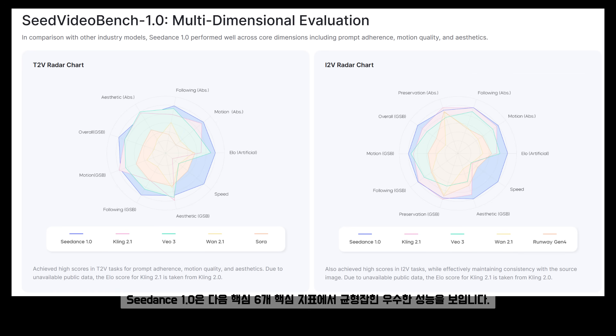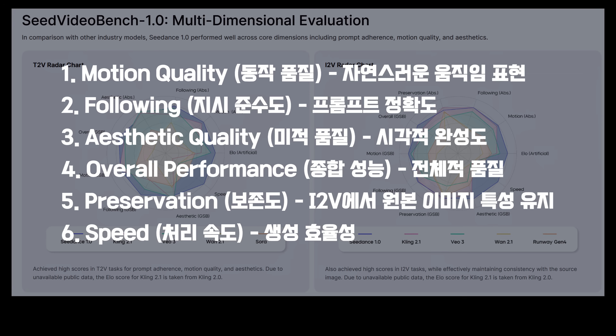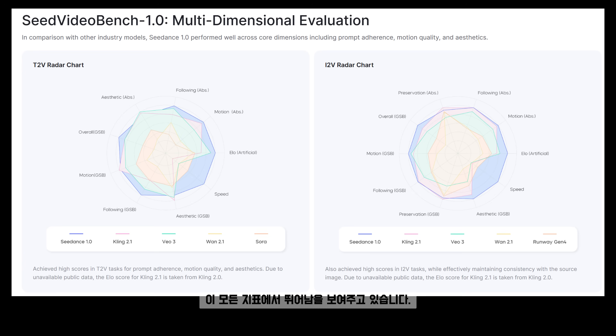시댄스 1.0은 다음 6개의 핵심 지표에서 균형 잡힌 우수한 성능을 보입니다: 자연스러운 움직임을 표현하는 Motion Quality, 프롬프트 정확도를 의미하는 Following, 시각적 완성도를 뜻하는 Visual Quality, 전체적인 품질을 나타내는 Overall Performance, I2V에서 원본 이미지를 얼마나 유지하는지를 보여주는 Preservation, 그리고 처리 속도를 나타내는 Speed가 있습니다. 이 모든 지표에서 시댄스 1.0은 뛰어남을 보여주고 있습니다.